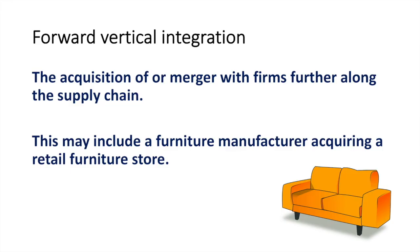Next is forward vertical integration, which is the acquisition of or merger with firms further along the supply chain. An example could be a furniture manufacturer acquiring a retail furniture store. The supply chain refers to the process a product follows from creation to final delivery to the consumer. For furniture, this would include those who provide fabric and wood to the manufacturer, and finally to the seller who sells it directly to the consumer.